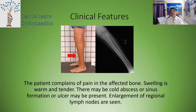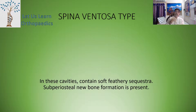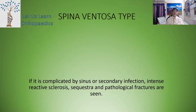Radiographs in anteroposterior and lateral views of the affected part will show irregular cavities with sclerosis, periosteal reaction particularly, and soft tissue swelling. There is a type known as spina ventosa, particularly when it affects the long tubular bones of the forearm. There may be a fusiform swelling of the bone — that is what we call the spina ventosa type. In this type, cavities contain soft feathery sequestra, subperiosteal new bone formation is present, and if complicated by sinus or secondary infection, intense reactive sclerosis, sequestra, and pathological fracture are also seen.